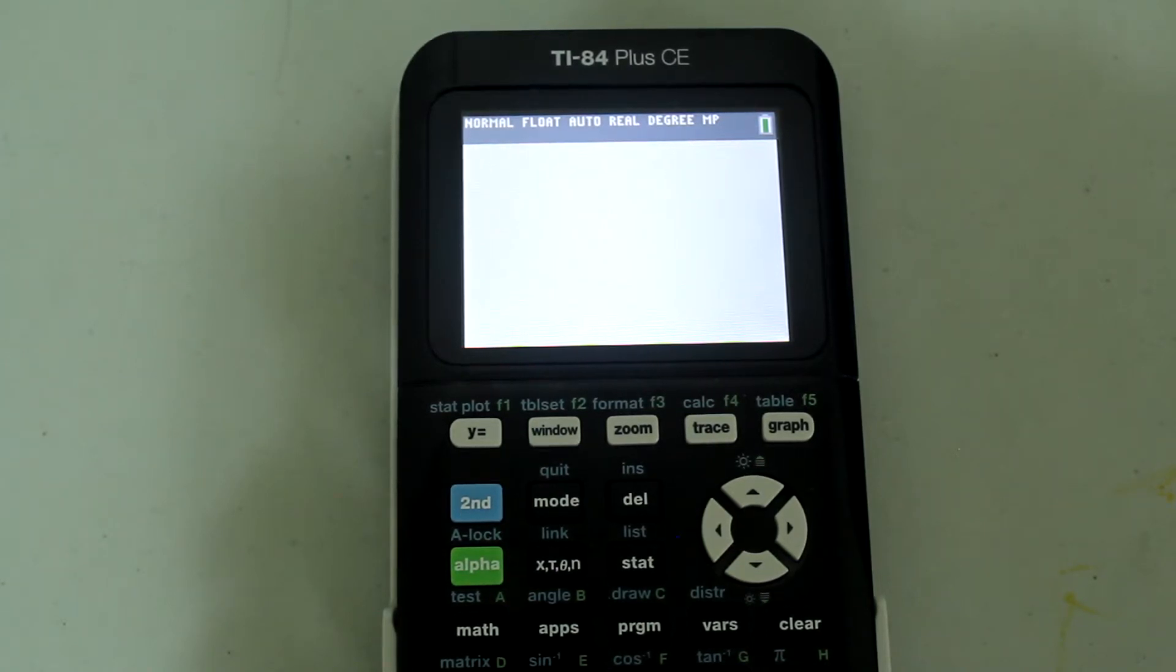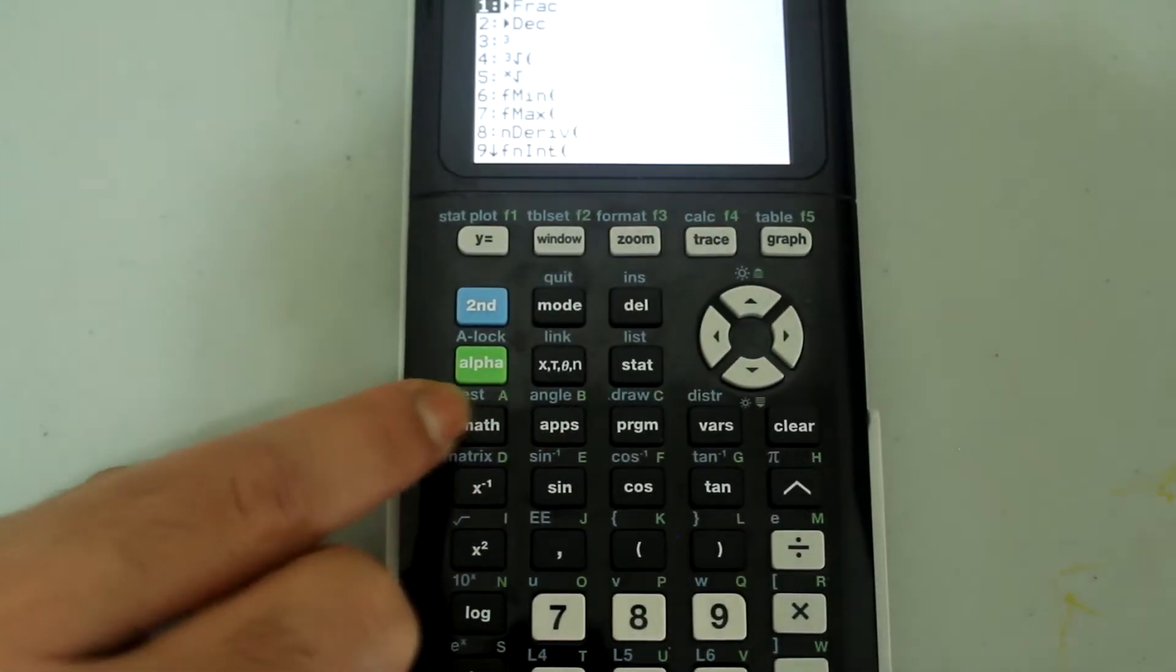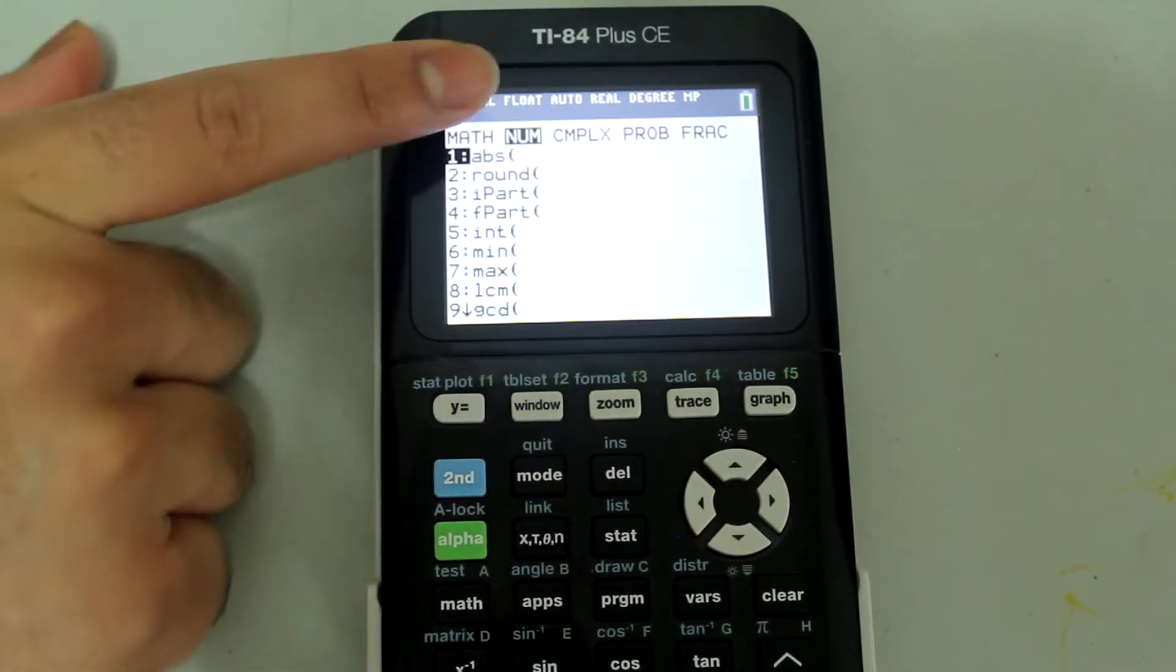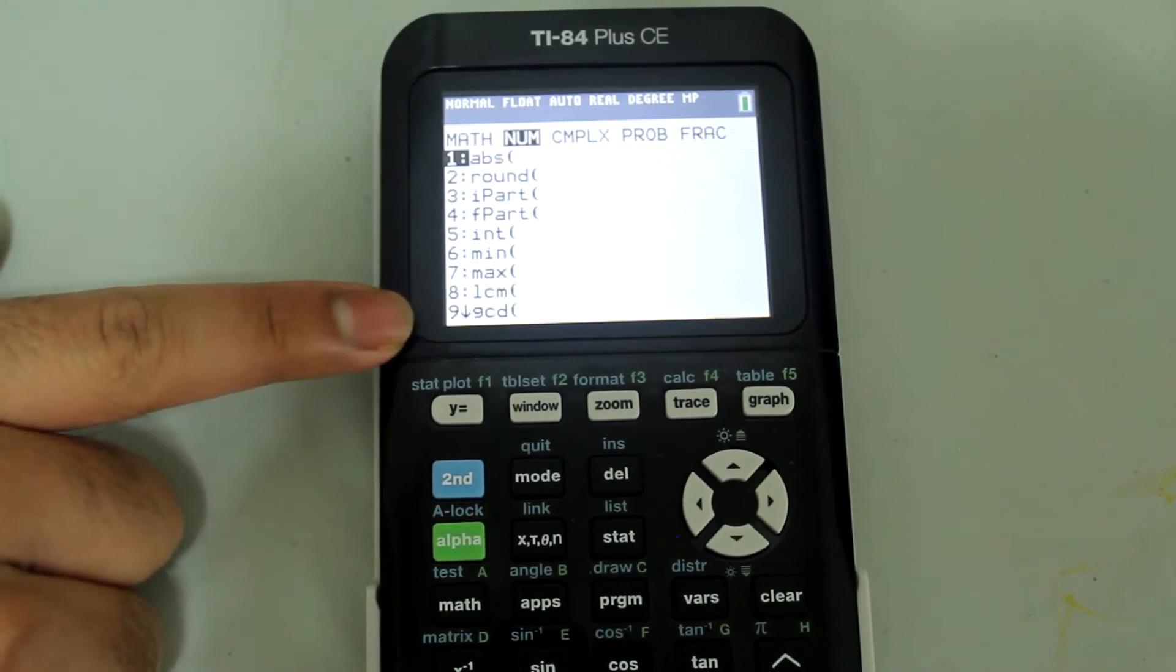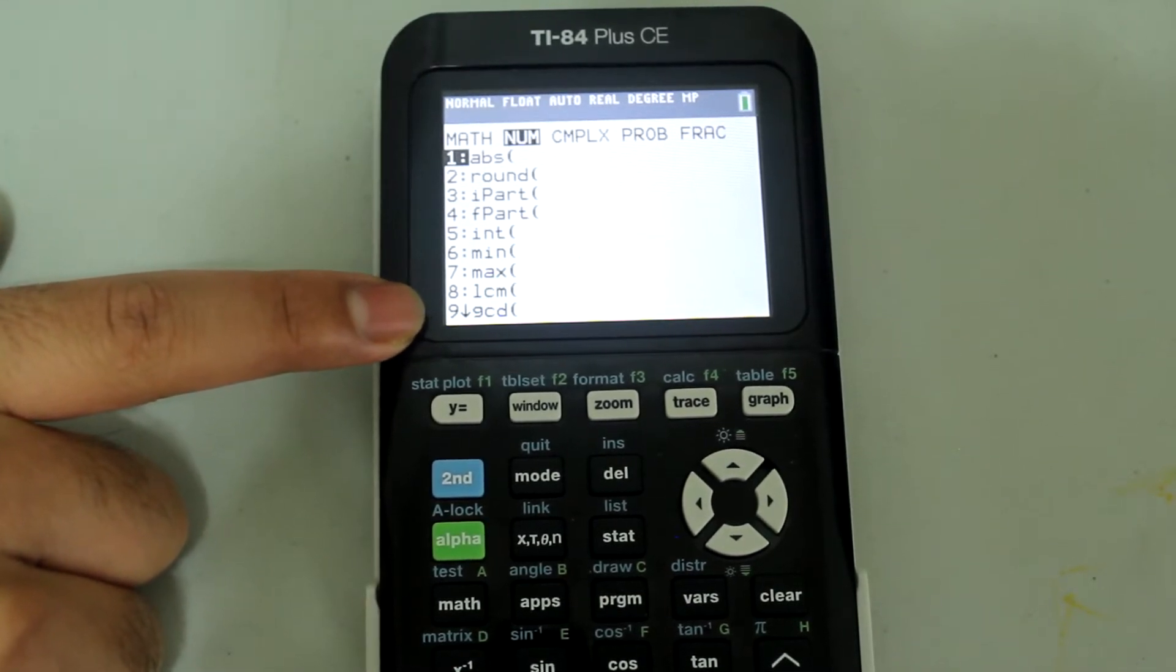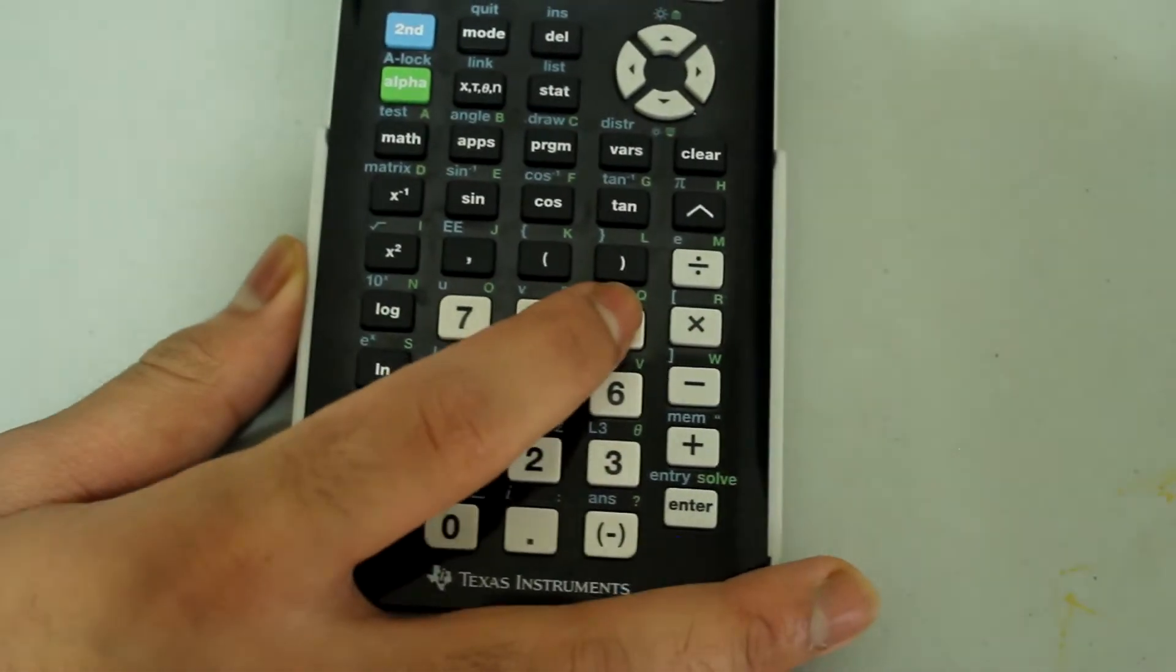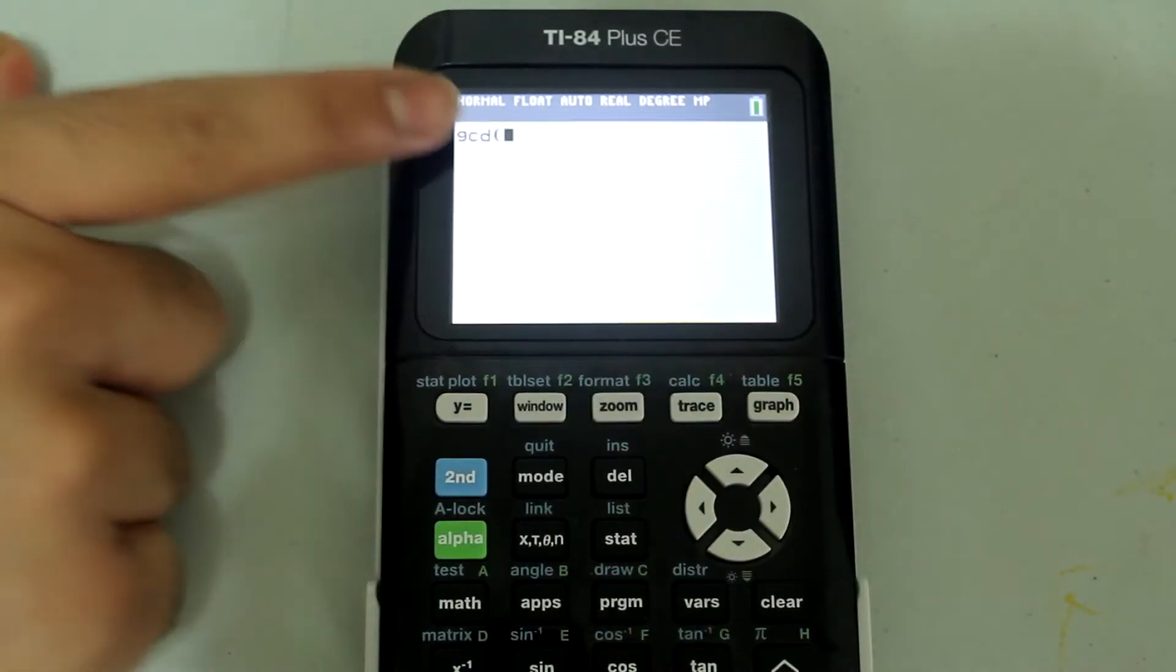Without further ado, let's get to it. First, press the math button and this screen comes up. Use the right arrow to arrow over to the NUM tab and then select the ninth option which is GCD for greatest common divisor. So press 9 on the number pad and then GCD appears on the screen with the open parenthesis.